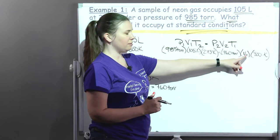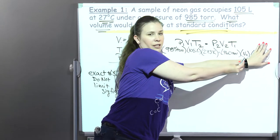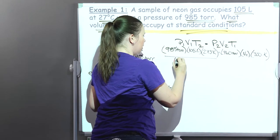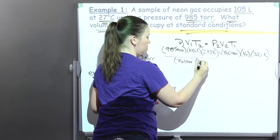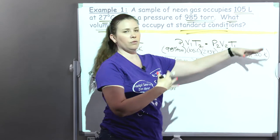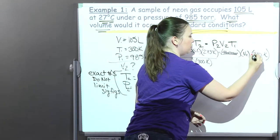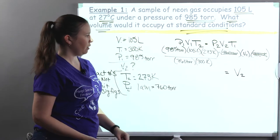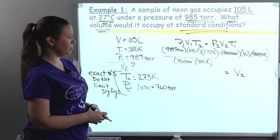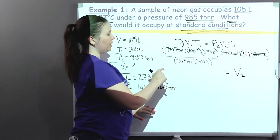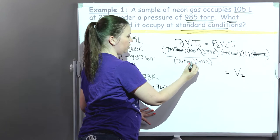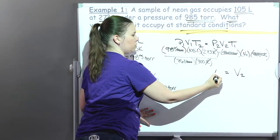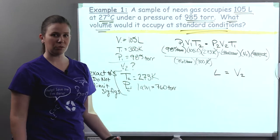Time to play — we want to isolate V2. If I have two things I need to remove to isolate, I'm just going to divide by both of them — divide by 760 torr and 300 K. On the right-hand side, that cancels out the 760 torr and the 300 K to get V2. Let's check the units: torr on top and torr on bottom cancel; Kelvin on the bottom and Kelvin on the top cancel. What's left is liters — and liters make sense for volume, so it's set up right.